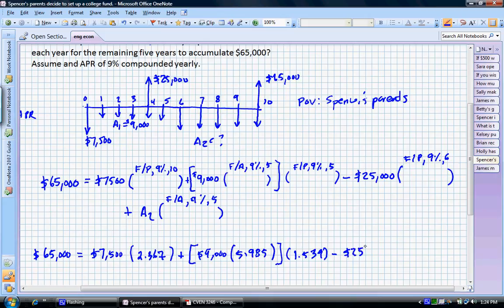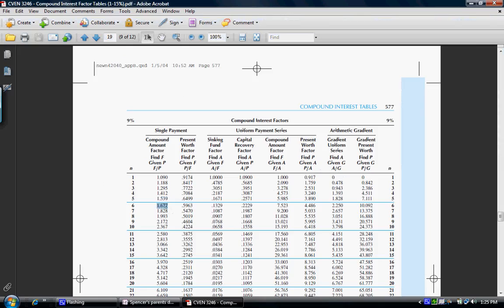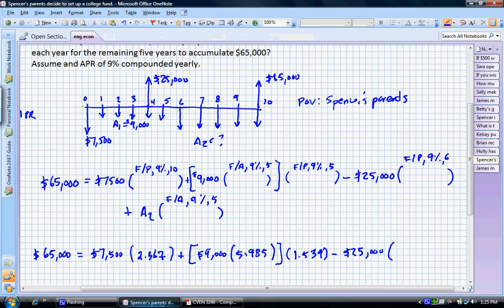We're going to subtract our $25,000 and the interest it would have earned. So F/P, 9 and 6. So we need to go F/P, 9 and 6. So that's going to be 1.677.